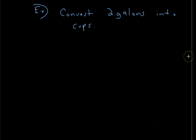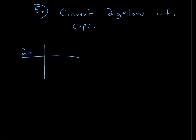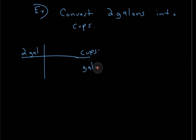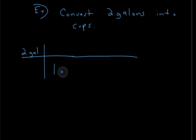Next: convert 2 gallons into cups. We want cups on top and gallons on the bottom to cancel the gallons. We don't have a direct gallons-to-cups conversion, so we'll chain conversions we already know. We know 1 gallon equals 4 quarts, so put gallons on the bottom and 4 quarts on top.